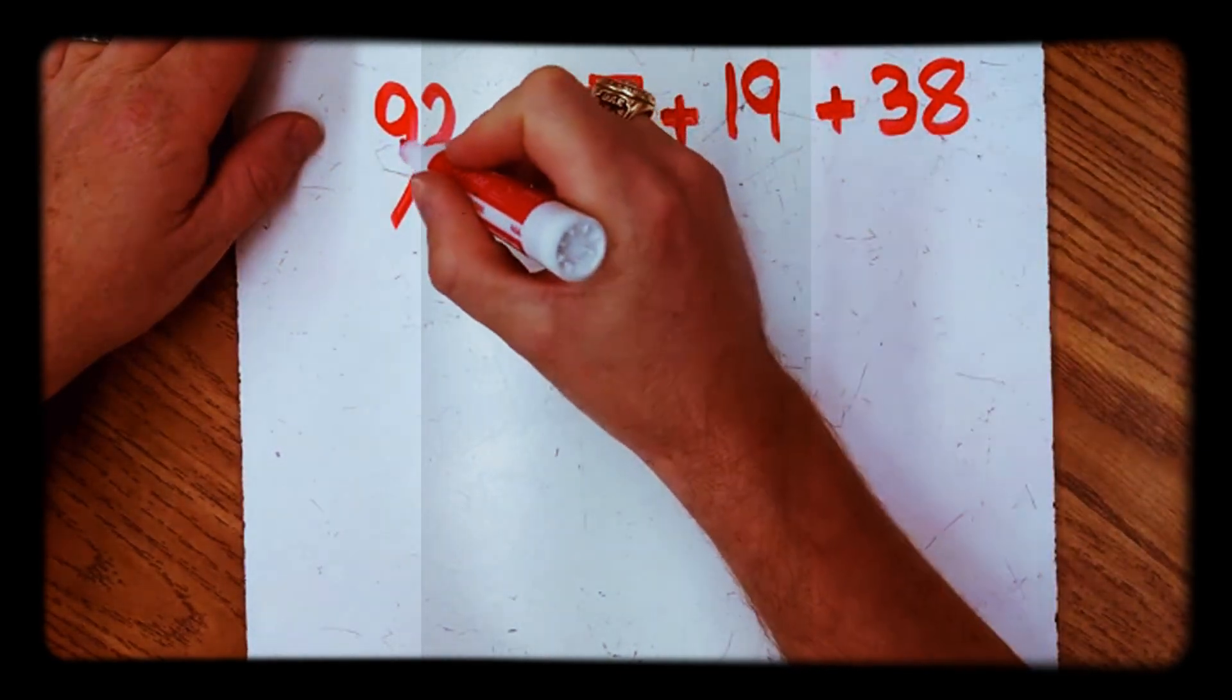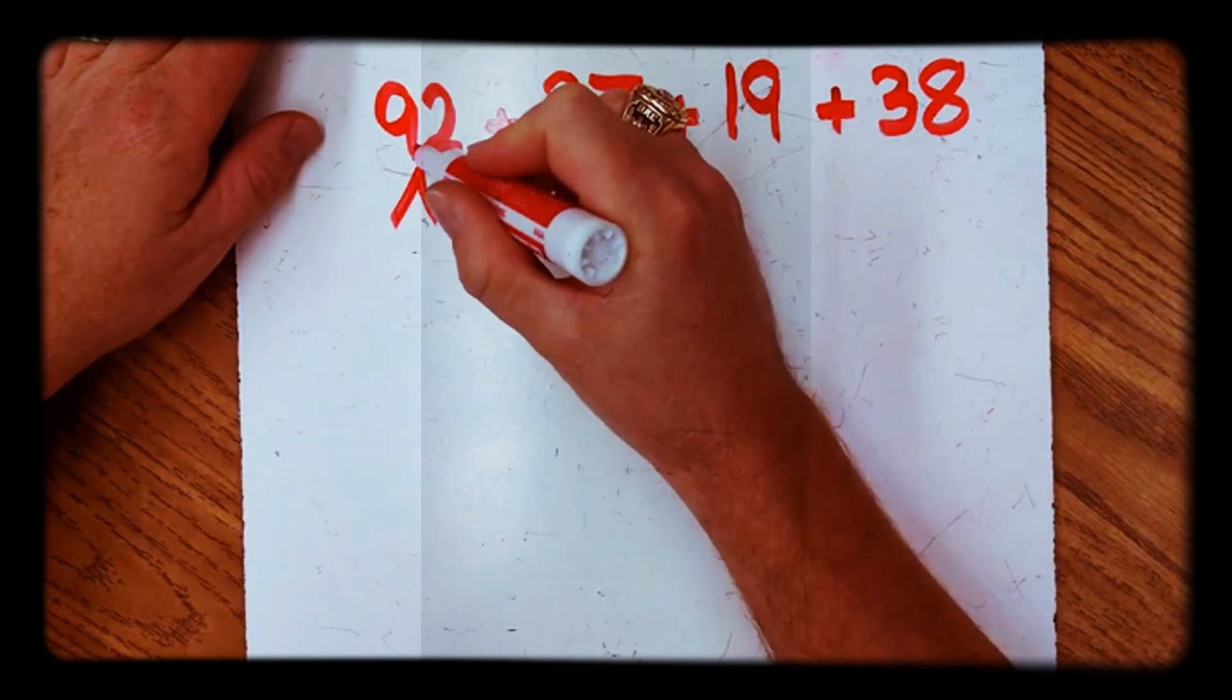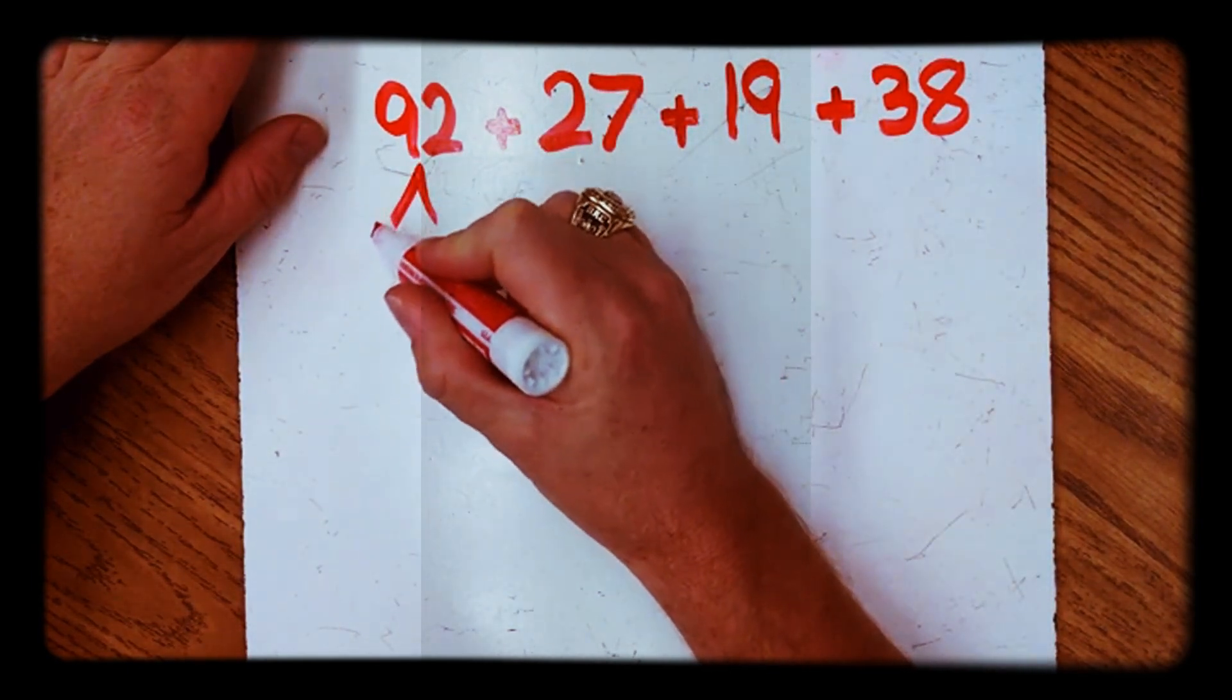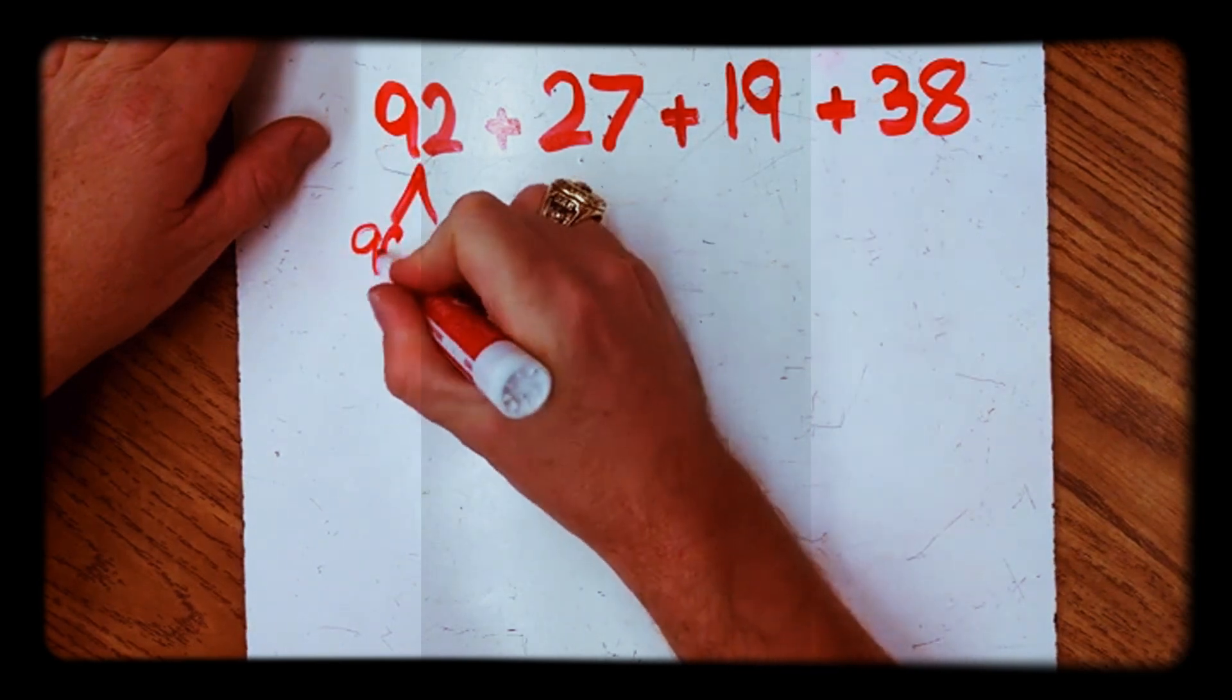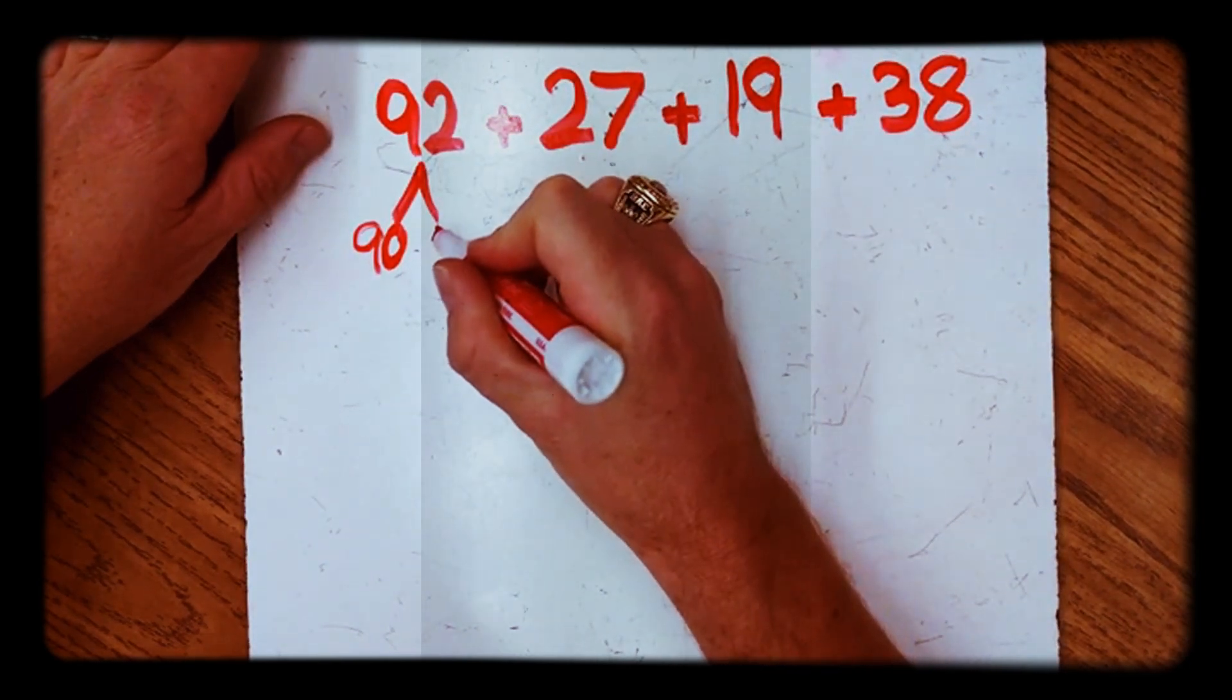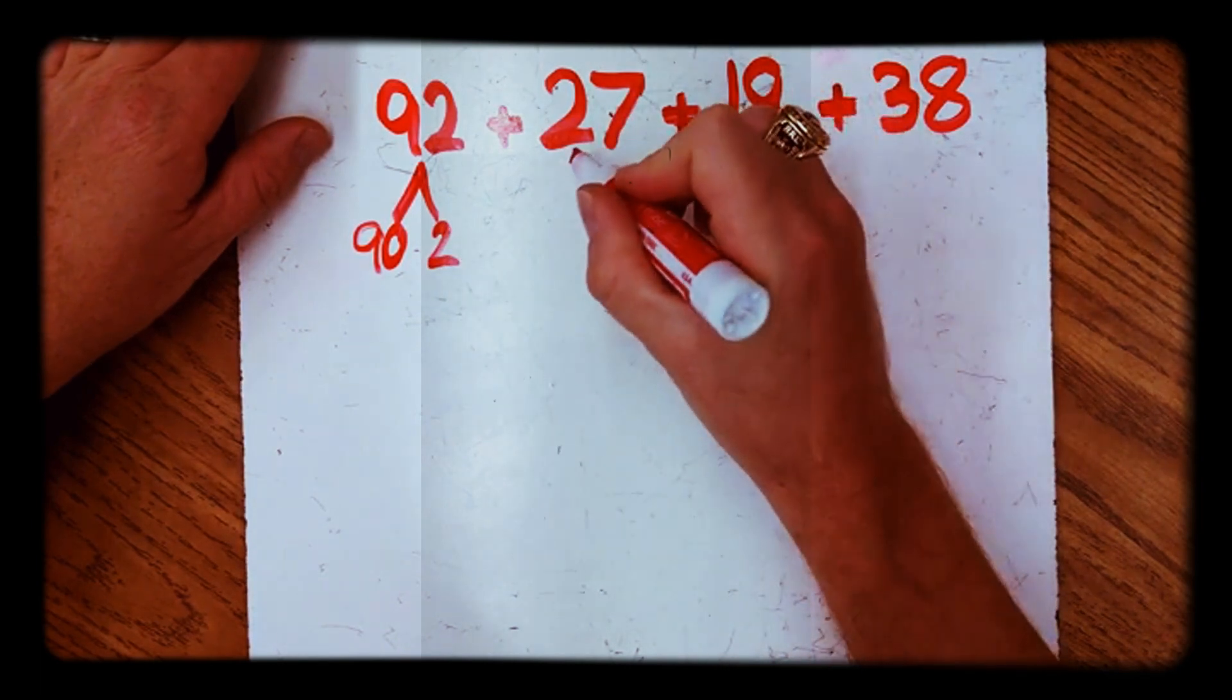The first step we're going to do is decompose by breaking apart our values. So the nine is in the tens place, so it's worth 90. Our two is in our ones place, so it's worth two. And we'll do the same with the rest of them.